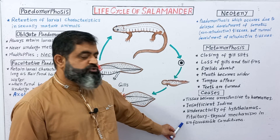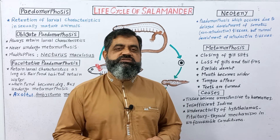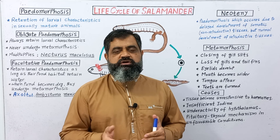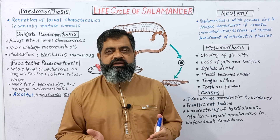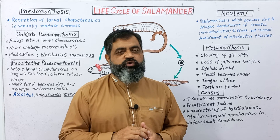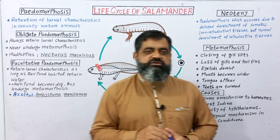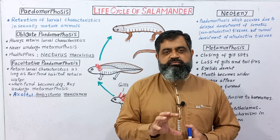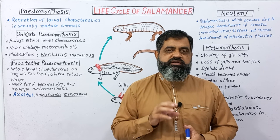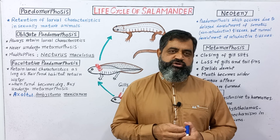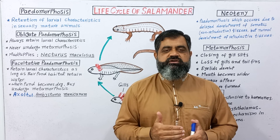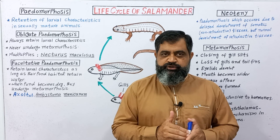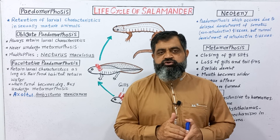This usually happens under unfavorable conditions such as presence or absence of water, diet, food, weather, cold or summer, depending on the type of environment. In the condition known as pedomorphosis or Neoteny, the larval body form of an animal like a salamander retains the larval form along with sexual maturity. Usually sexual maturity is achieved after converting into adult form, but the ability to reproduce in the larval body form is known as pedomorphosis or Neoteny.